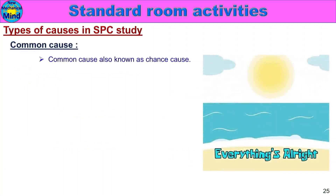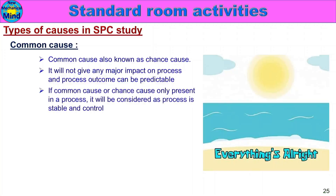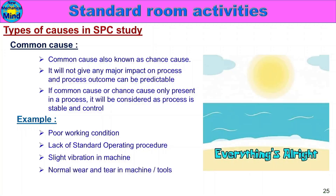Common cause is also known as chance cause. It will not give any major impact on process, and the process outcome can be predictable. Examples of common cause include: poor working condition, lack of standard operating procedure, slight vibration in machine, normal wear and tear in machine or tools, and ambient temperature and humidity.